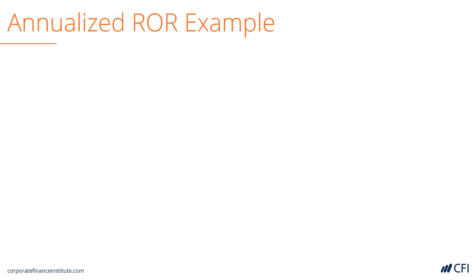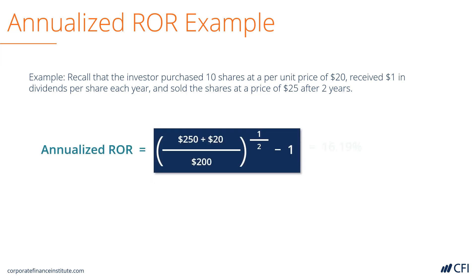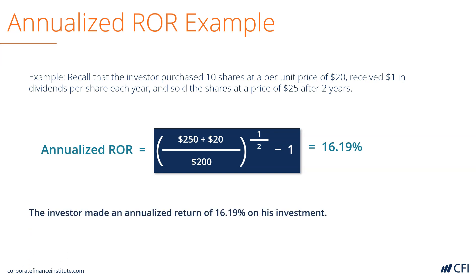Let's look at an example of calculating annualized rate of return using the same numbers from before. The annualized rate of return is calculated as (250 plus 20) divided by 200, to the power of 1 over 2 years, minus 1 — which equals 16.19%. This means the investor made an annualized return of 16.19%, or that he made 16.19% return each year.